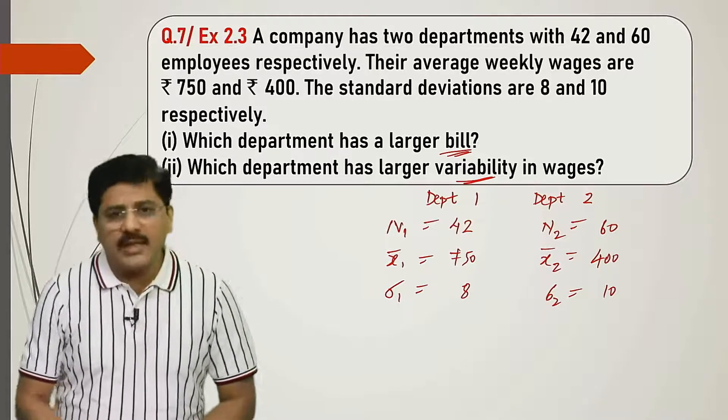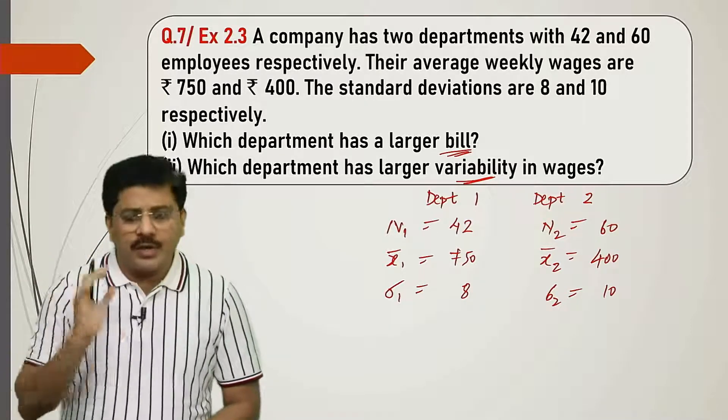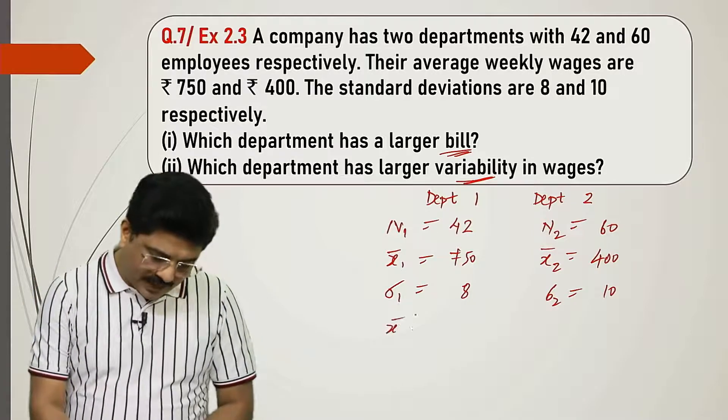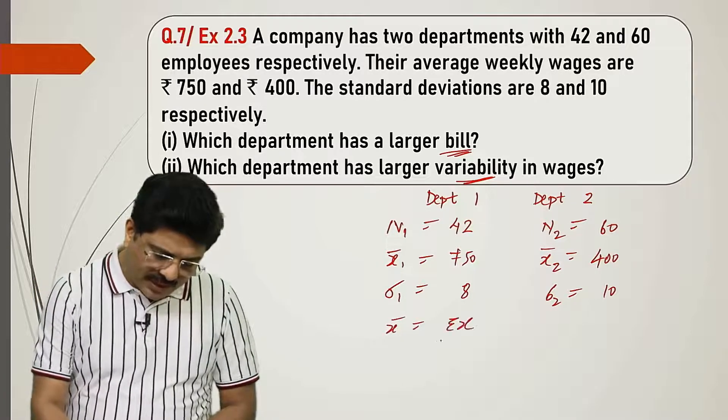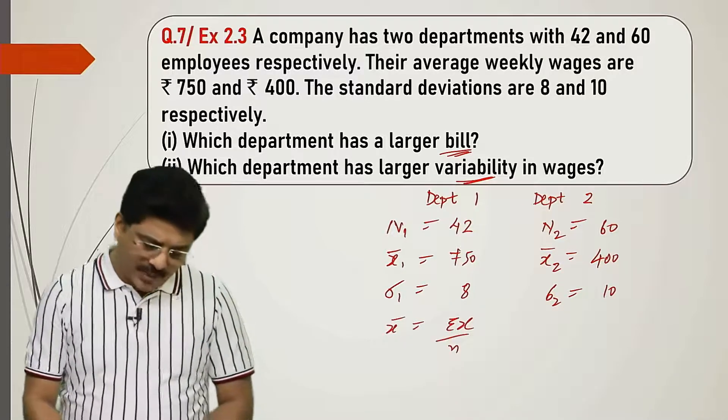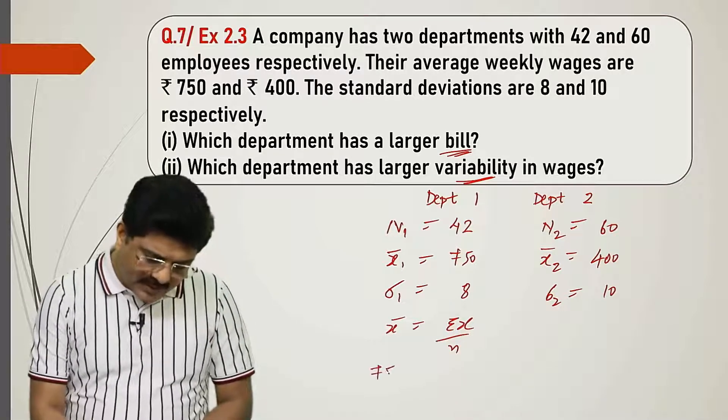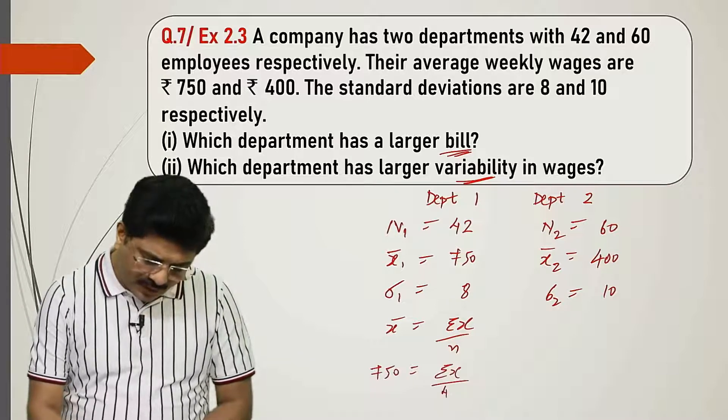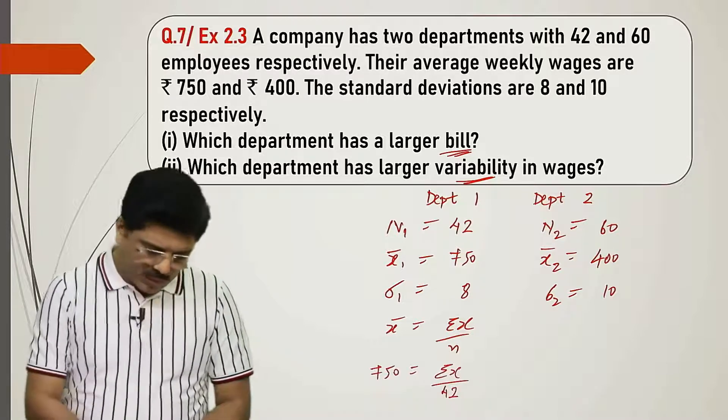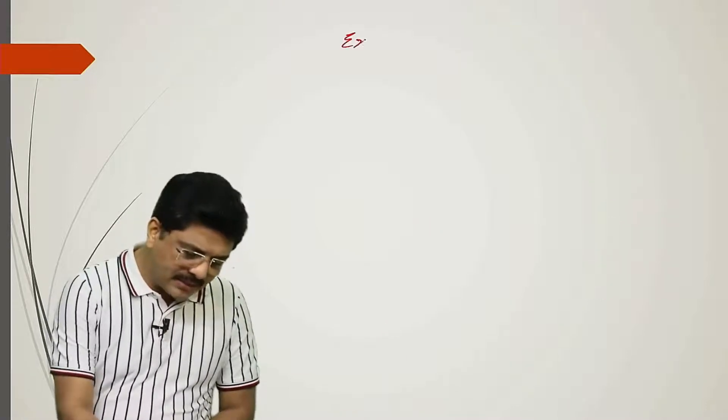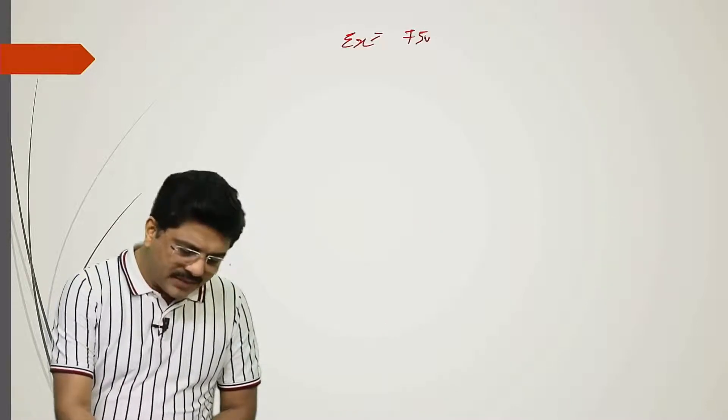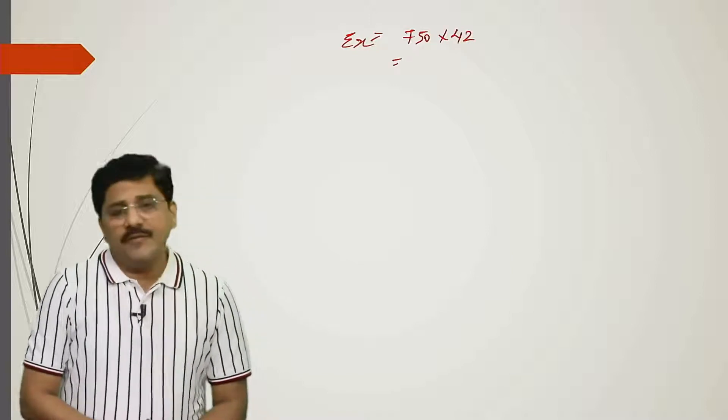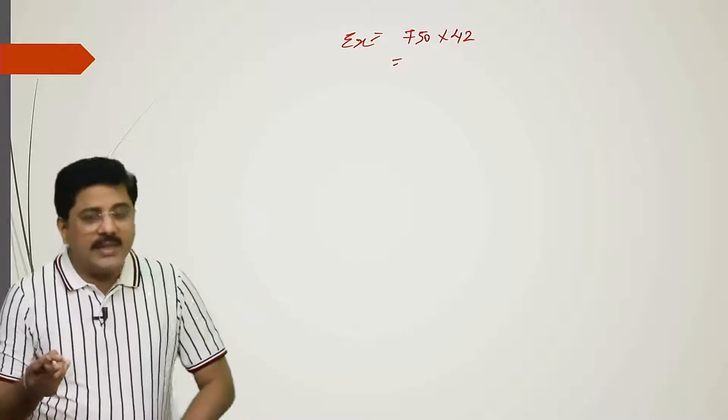Department bill means how much salary did we give to 42 workers? We work backwards. X bar equals summation x upon n is the formula. X bar is 750, equals summation x upon n which is 42. So summation x is 750 into 42.